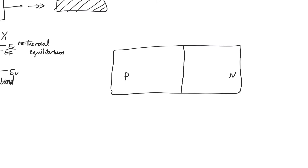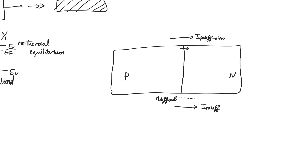Holes start to diffuse towards the n-side, so there is a hole diffusion current flowing from the p-side to the n-side. There is also a flow of electrons from the n-side to the p-side, drawn as a dotted line to indicate it is a flow of electrons, not a current — the resulting current flows in the opposite direction, which we call the electron diffusion current. The assumption that diffusion will continue until we see uniform distribution across the entire device is built upon a wrong assumption.